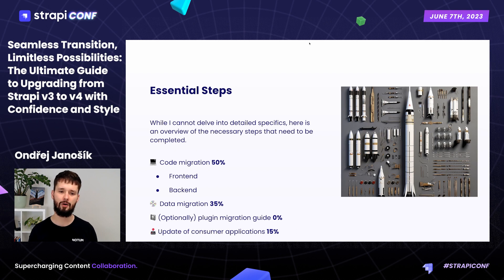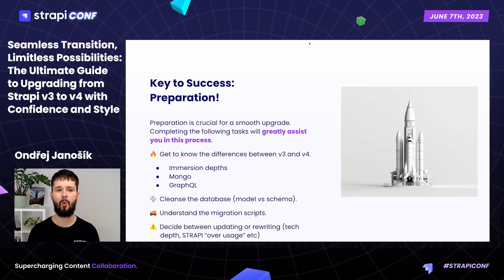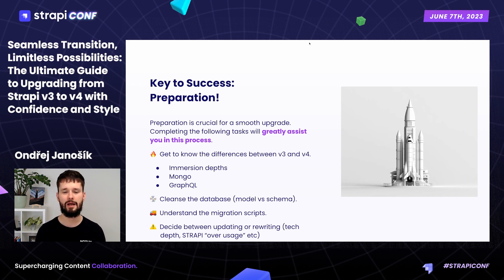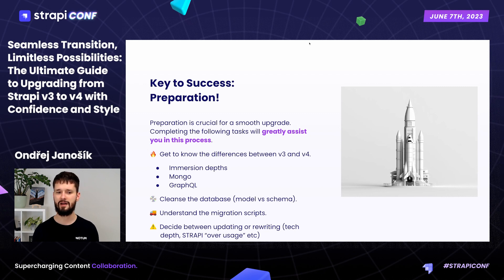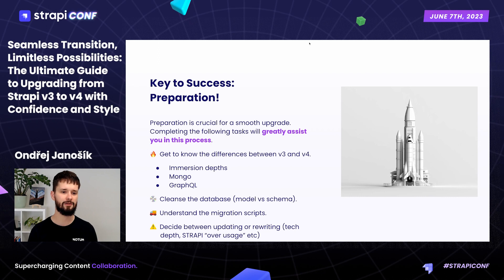Key to success is preparation. First, get to know the differences between version 3 and version 4. For example, MongoDB support is gone, GraphQL was completely rewritten and allows more things, and REST was enhanced with some GraphQL-like features. So consider what you want to use. You also need to cleanse the database, which will make the migration easier — more on that in the demo.